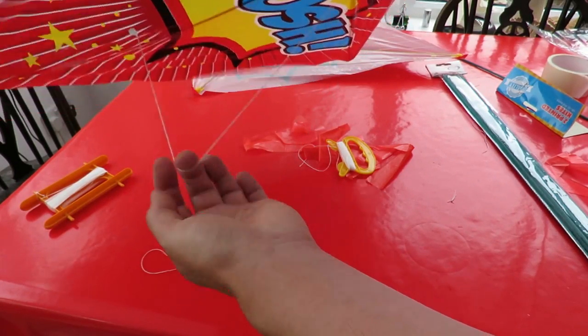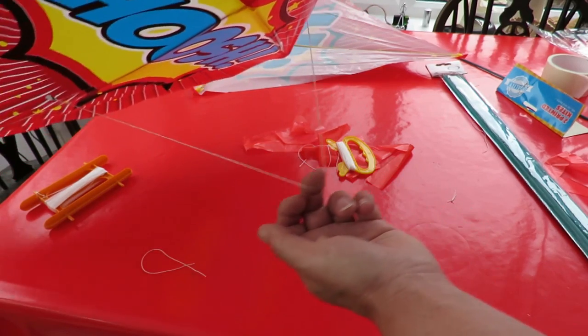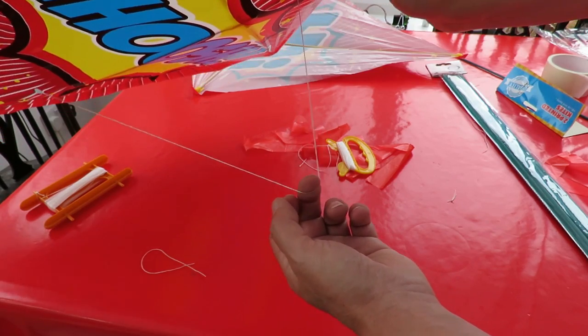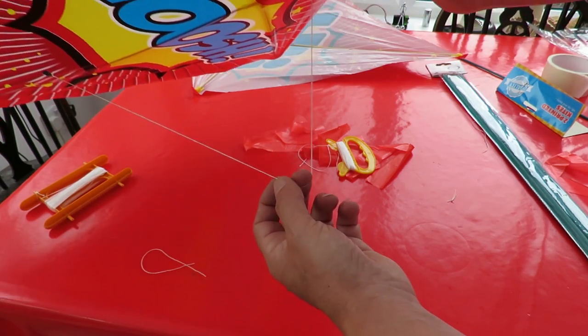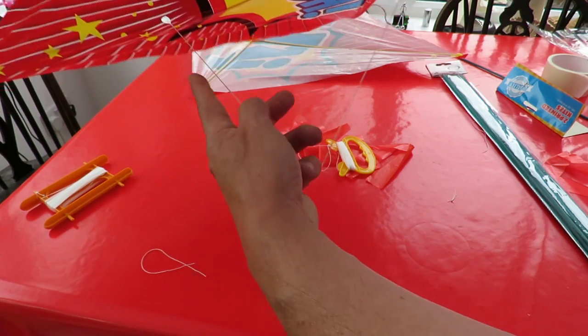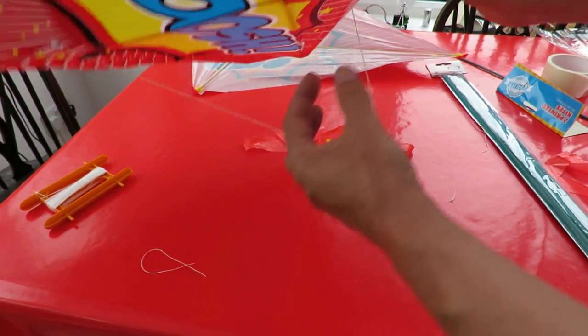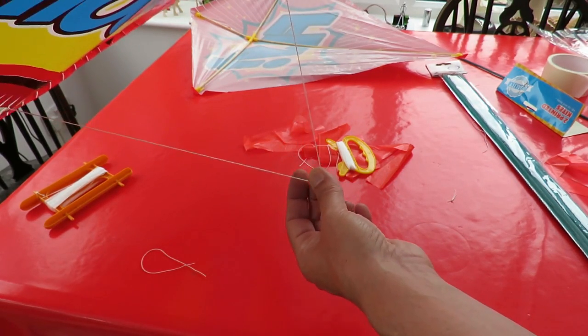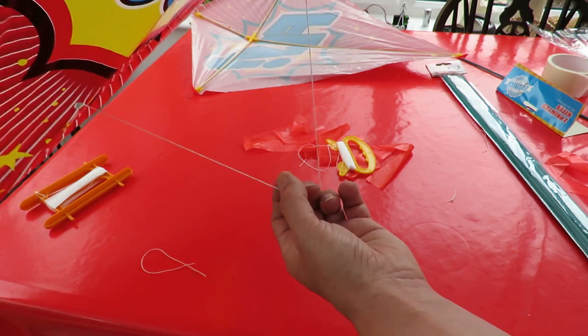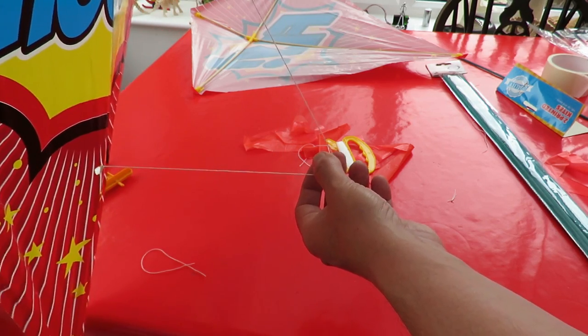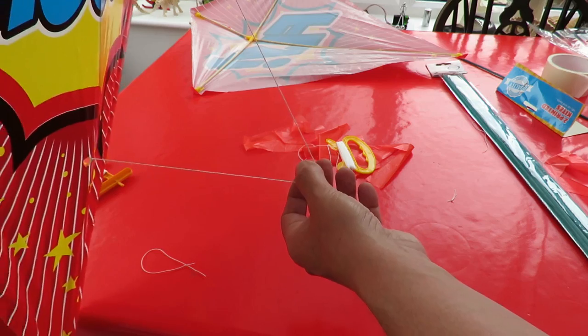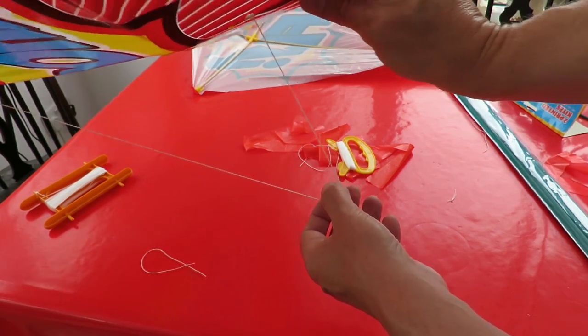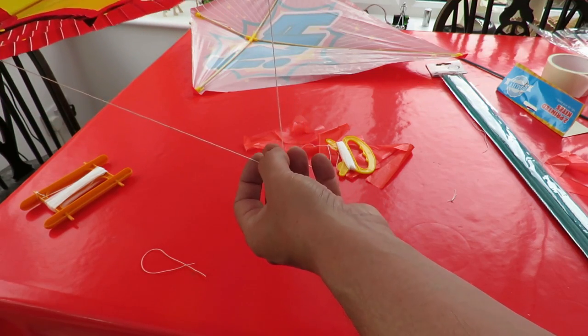Now we need to decide where we're going to attach the flying line to get the right angle of attack. Now there's no information, there's no instructions. But my understanding is this bit at the back needs to be longer than this bit at the front so that we have the right angle when it's in the wind. If it's too far back, the kite tries to go up at a very steep angle, and if it's too far forwards, the kite's trying to fly towards you. So somewhere between the two is the ideal position.